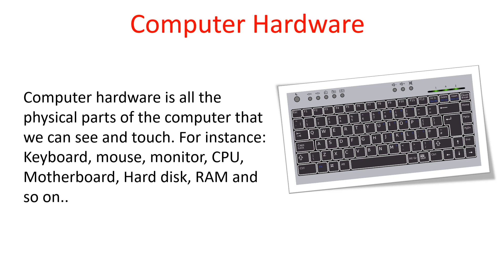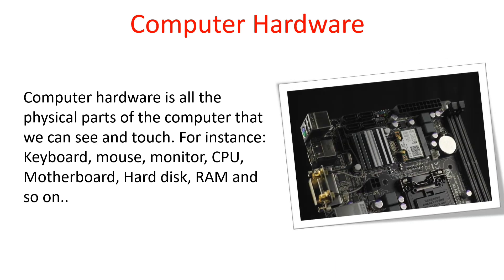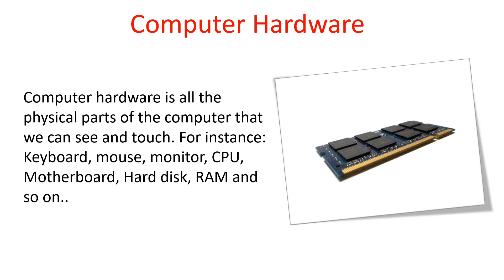In the same way, the mouse, monitor, CPU, motherboard, hard disk, RAM, and so on — these are some examples of computer hardware. We can say that computer hardware is all the physical or solid parts of our computer system that we can see, touch, and feel.